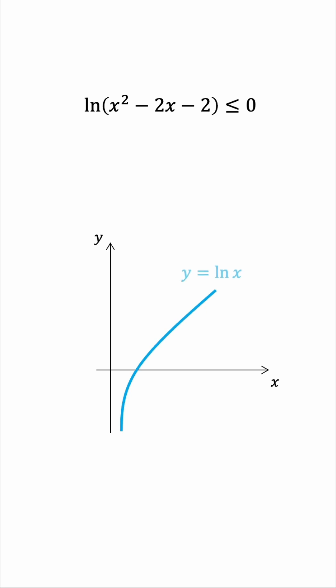we see that the x-intercept is the point (1, 0). For the natural log to be less than or equal to 0, the input needs to be between 0 and 1.